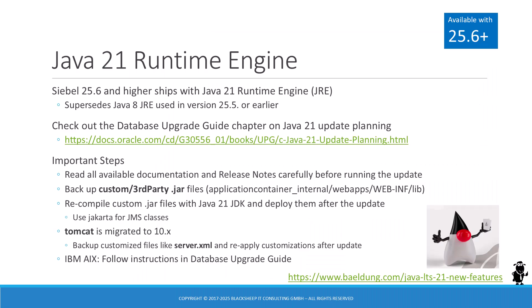Java-based components in the Siebel CRM architecture require a Java Runtime Engine, or JRE. To ensure smooth updates and avoid compatibility issues, Oracle ships the JRE with the Siebel binaries. With Siebel 25.6, Oracle hikes up the JRE version from 8 to 21. Naturally, this has implications for developers and administrators. To allow for a smooth upgrade to 25.6 or later, Oracle has documented important steps in the database upgrade guide. These steps include recompilation of all custom and third-party JAR files with JDK 21.